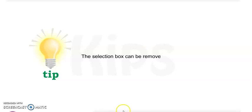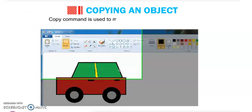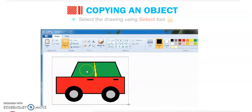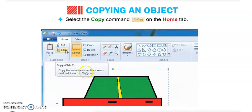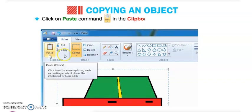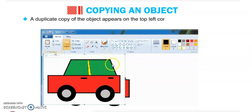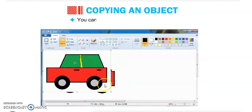Tip: The selection box can be removed by clicking outside the selected area. Copying an object means making many copies of it. The Copy command makes a duplicate copy of an object. First, select the drawing, then click Copy on the Home tab, then click Paste in the Clipboard group. A copy of the object appears on the top left corner of the drawing area, and you can move the picture to any location.